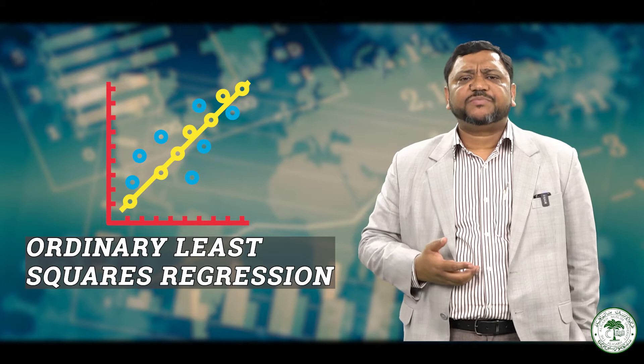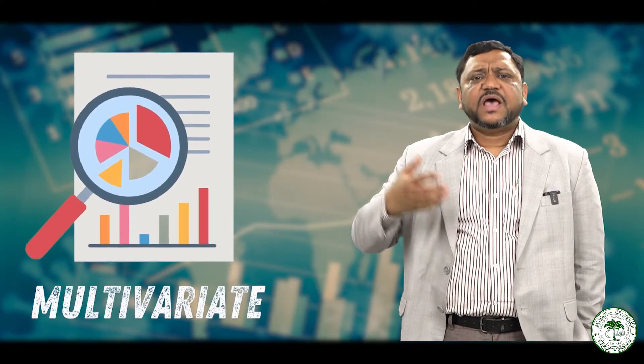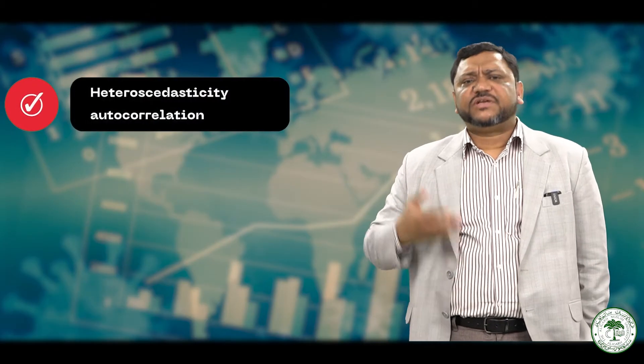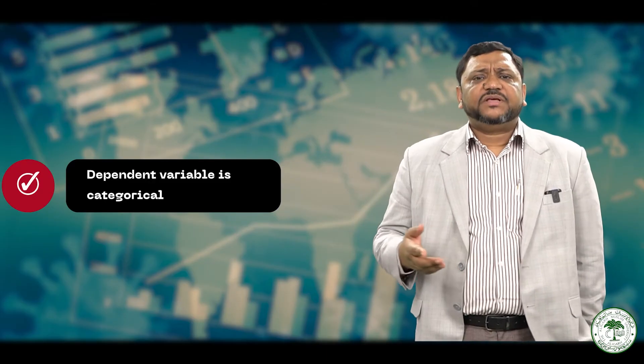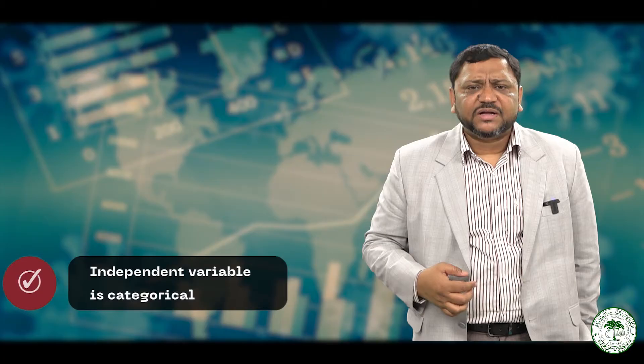Now in this course we will be starting with our basic OLS, ordinary least squares method for regression, moving on to the multivariate case and then heteroscedasticity, autocorrelation, and then we will be looking where the dependent variable is categorical and the independent variable is categorical.